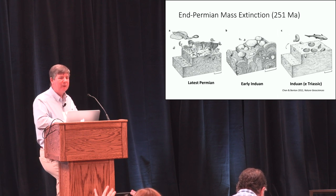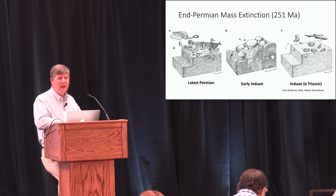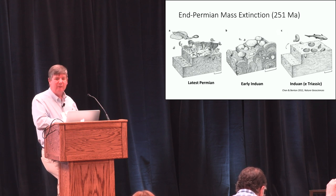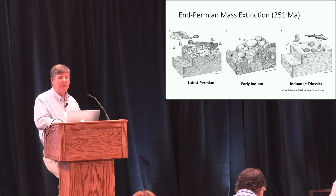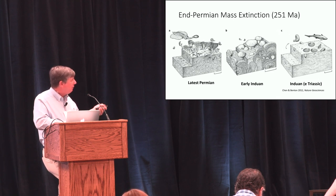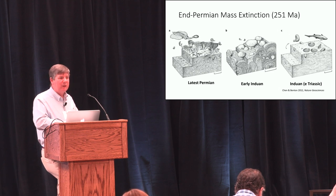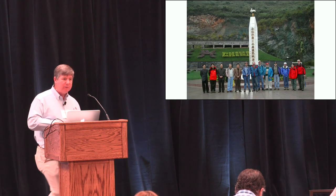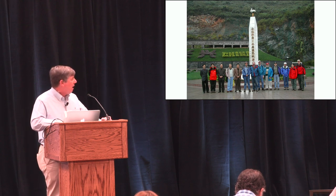The end-Permian mass extinction 251 million years ago is the reason you have clams, lobsters, sea urchins, and things like that in the oceans today. The consequence of this event was the disappearance of trilobites, rhizomes, and brachiopods — organisms that dominated 400 million years of life in the oceans. They were replaced eventually by different organisms. And with my colleagues at Nanjing, I've been working since the mid-90s on projects trying to understand this event.